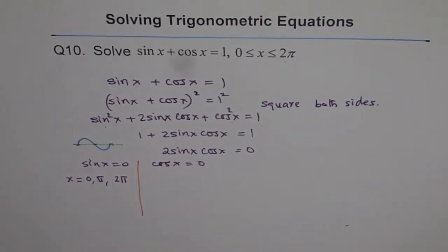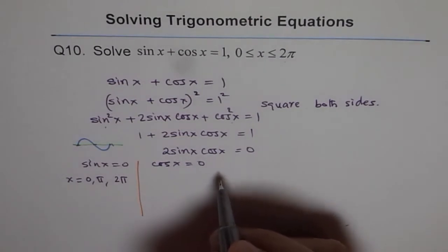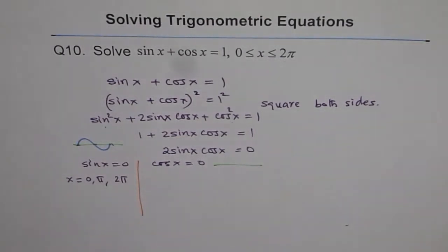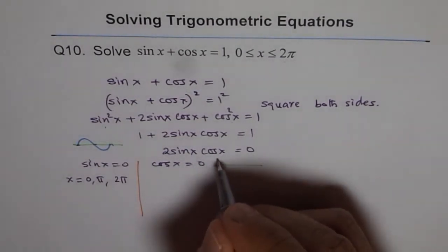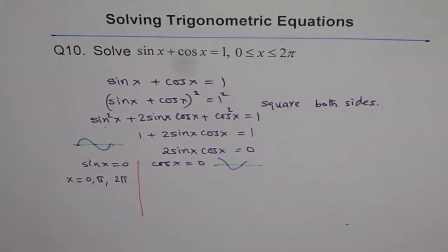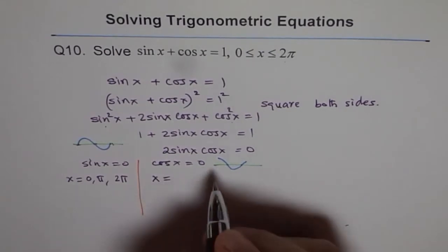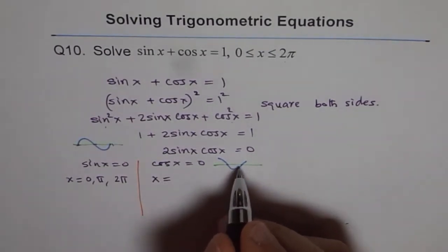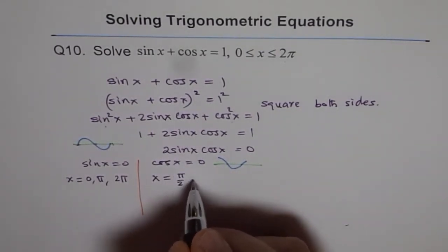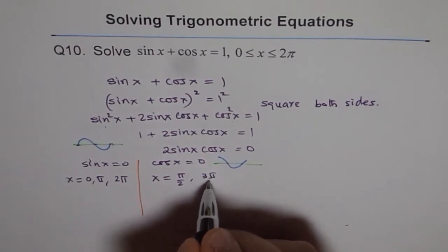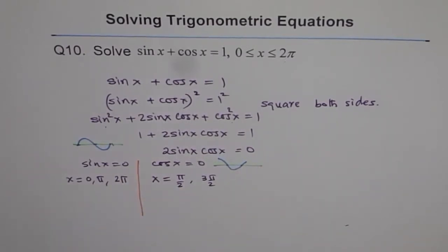How about cos x to be 0? Let me just draw cos x equals 0 here. So cos x equals 0 is kind of like this. These are the two solutions for cos x equals 0, and that gives us x equals π/2 and 3π/2.